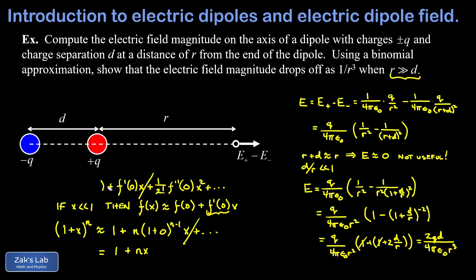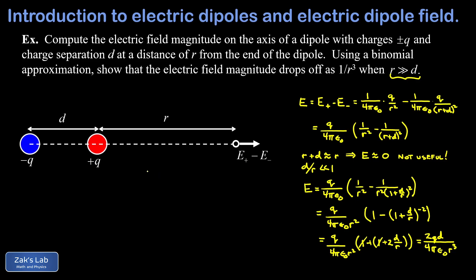Since our math lesson is over, we can clean up and make some room. Recall that the dipole moment p equals qd pops up in dipole calculations. In our final expression for the electric field at large distance, qd can be replaced with p, and we cancel a factor of two. Writing the final answer in its nicest form, the electric field as a function of distance from the dipole — when r is large compared to d — is p over two pi epsilon zero r cubed. In the next video we'll talk about the torque experienced by a dipole in a constant electric field and the associated potential energy.